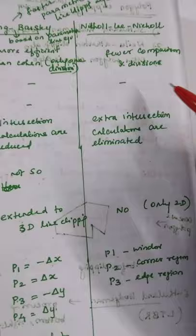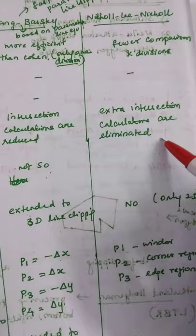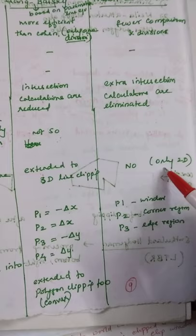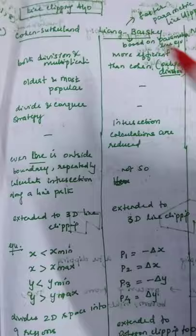The third algorithm is Nicholl-Lee-Nicholl. Here fewer comparisons and fewer divisions are involved. Extra intersection calculations are eliminated, which is a very good advantage for this algorithm. However, it cannot be extended — it is only a 2D line clipping algorithm. These are the three different available line clipping algorithms.